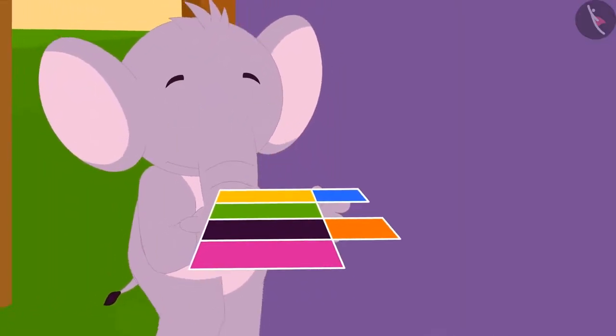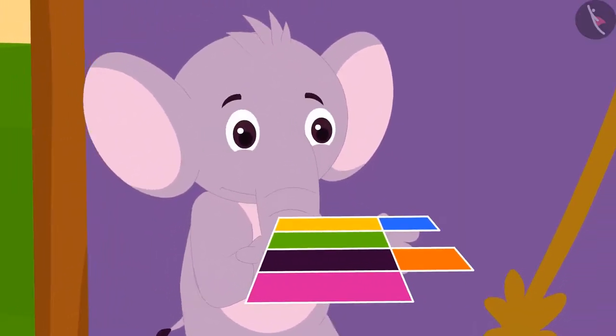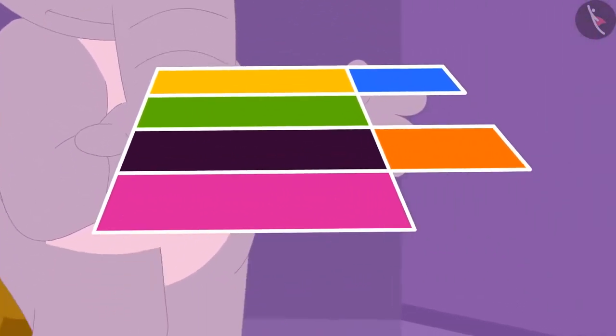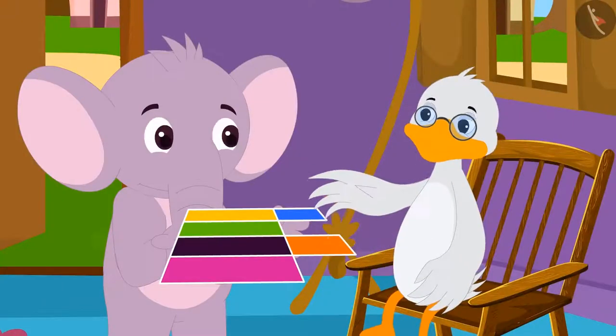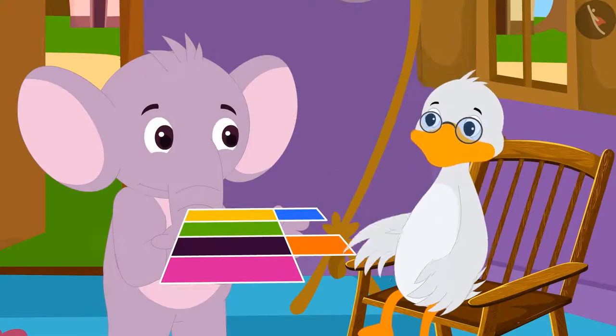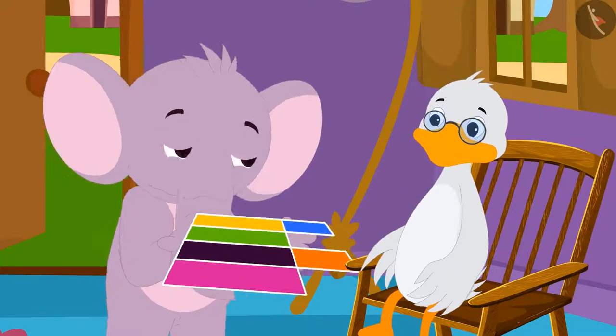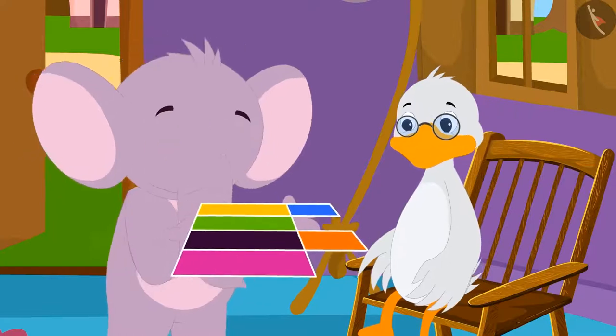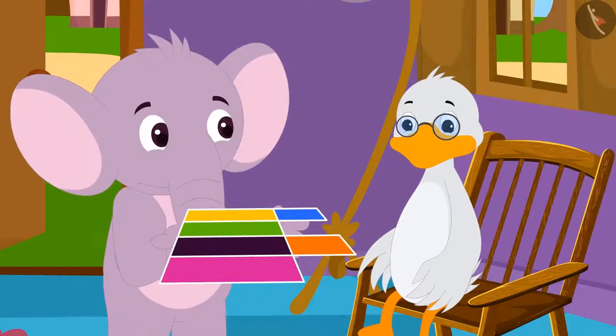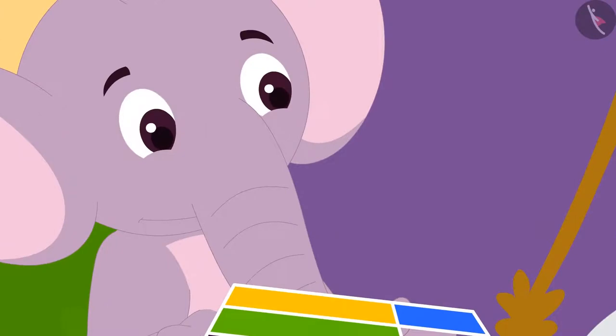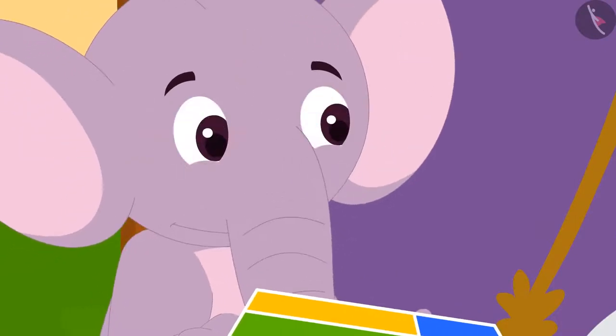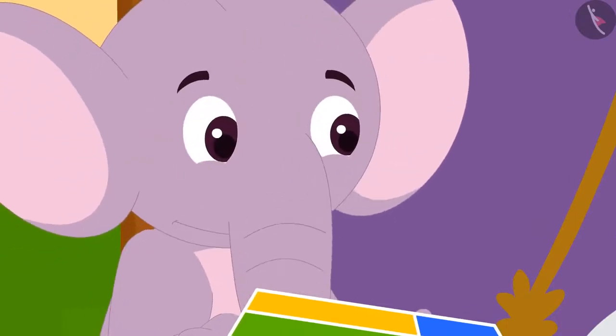Appu suddenly came to Babu uncle's house today. A cardboard cutout is also seen in his hand. When the uncle asked him the reason for his sudden visit, Appu told him that he bought cutouts of some cuboid shaped boxes. But now, despite his efforts, he was not able to make boxes from them.